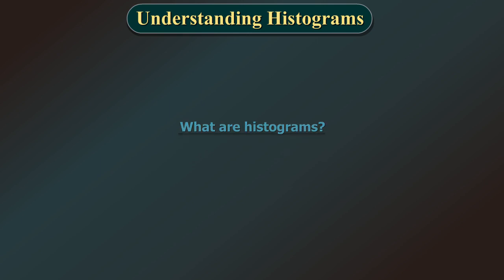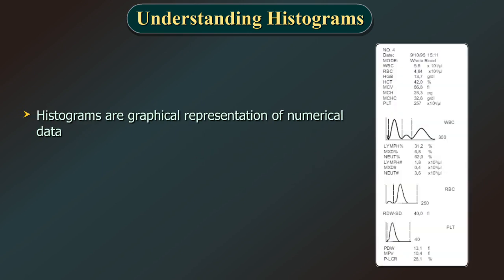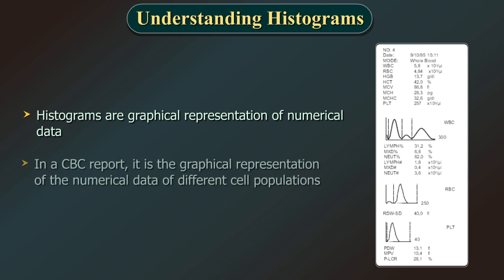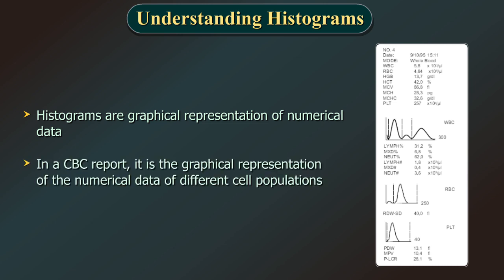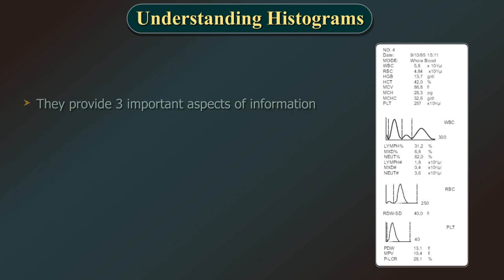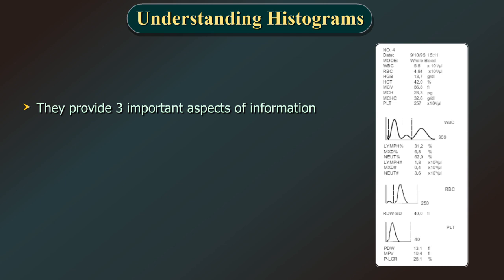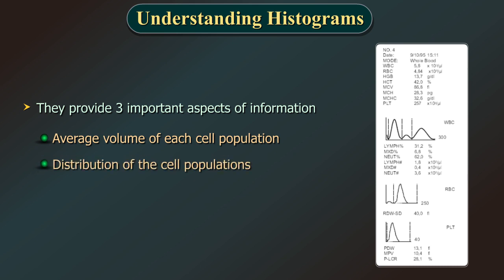So, what are histograms? Histograms are graphical representations of numerical data. In a CBC report, it is the graphical representation of the numerical data of different cell populations. They provide three important aspects of information: first, average volume of each cell population; second, distribution of the cell populations; and third, detection of subpopulations.